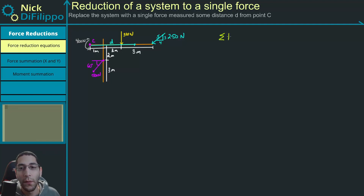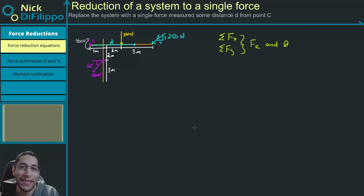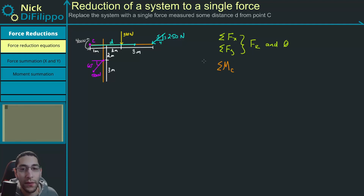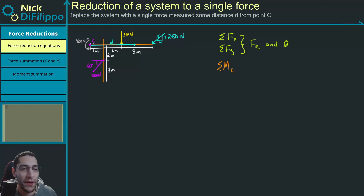We're going to start the same way. We're going to look at our forces in the x and our forces in the y. This gives us our resultant force and the angle that it makes. Where it differs a little bit is when we're looking at our moments — we need to take the moments about a point, and we're going to choose the point we're trying to find the distance away from. So we take the sum of the moments at point C.